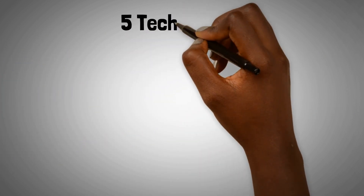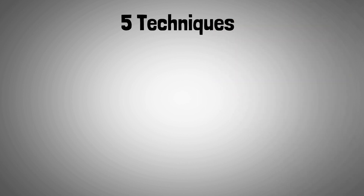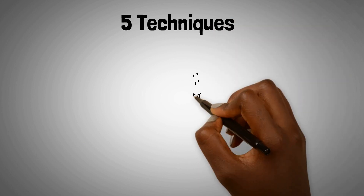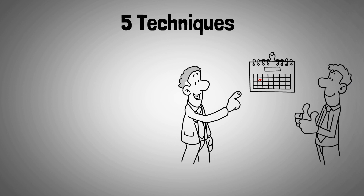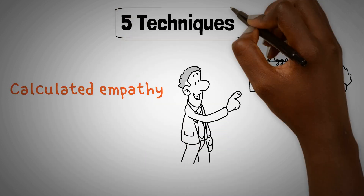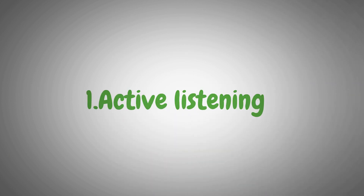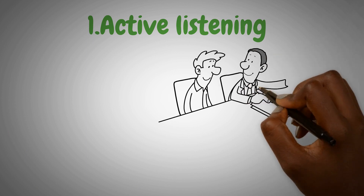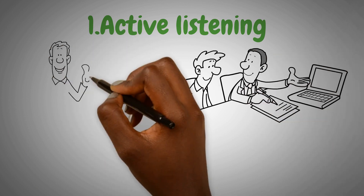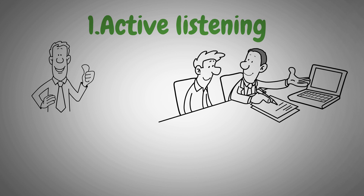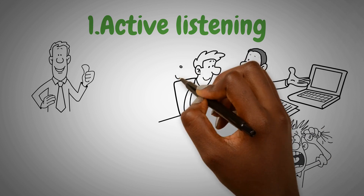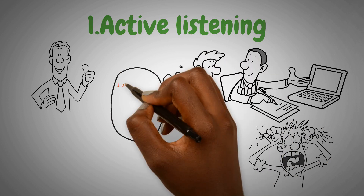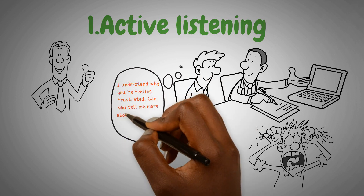Voss's five techniques for understanding emotions all fall under what he calls calculated empathy — making the other person feel safe with you. The first technique is Active Listening: paying close attention to what the other person is saying and demonstrating that you're engaged and interested in their perspective. For example, if someone tells you they're feeling frustrated, you might say, 'I understand why you're feeling frustrated. Can you tell me more about what's been bothering you?'